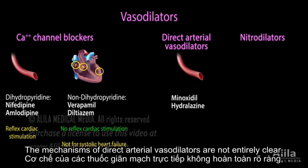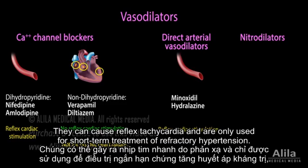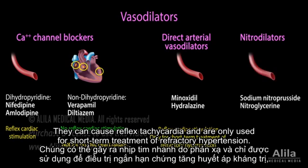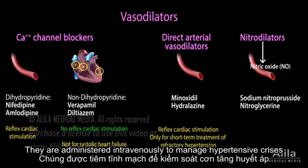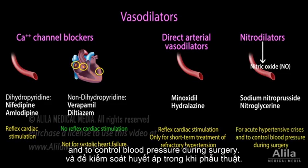The mechanisms of direct arterial vasodilators are not entirely clear. They can cause reflex tachycardia and are only used for short-term treatment of refractory hypertension. Nitrodilators act by releasing nitric oxide, a powerful vasodilator. They are administered intravenously to manage hypertensive crises and to control blood pressure during surgery.